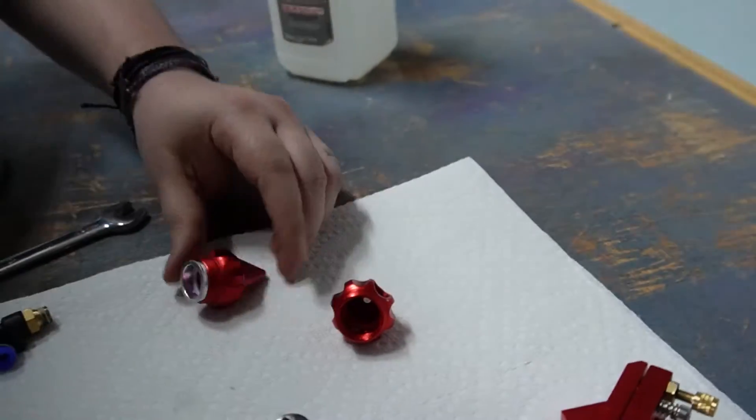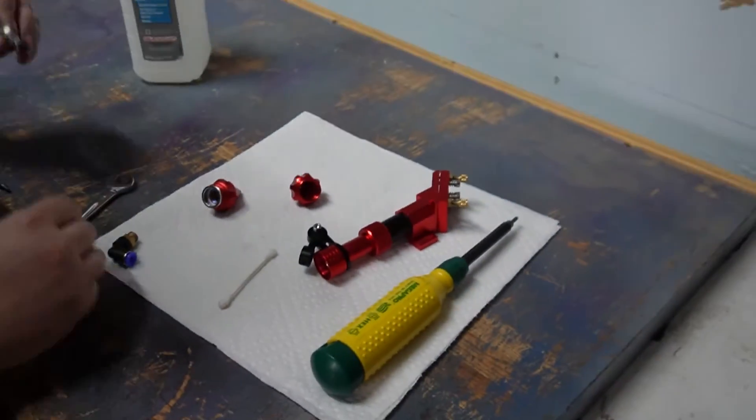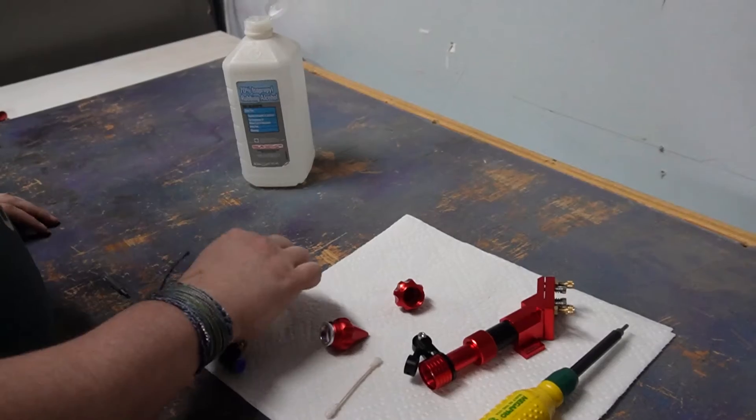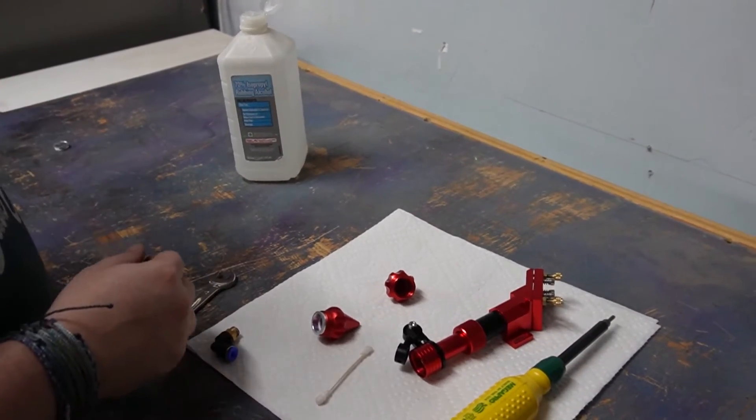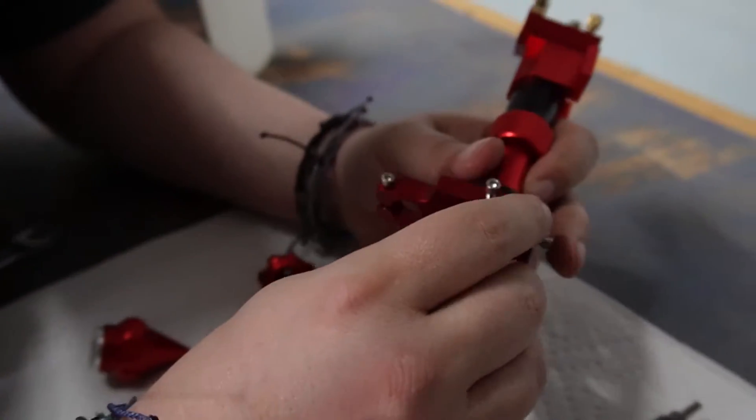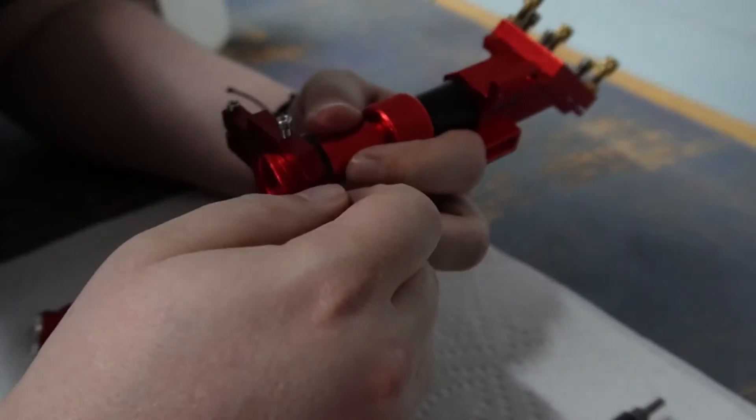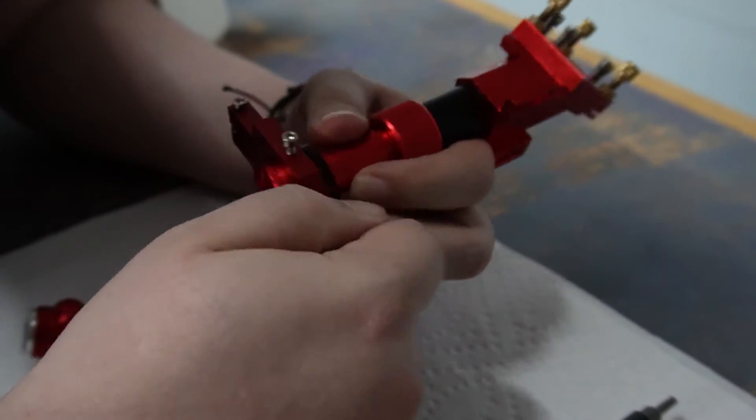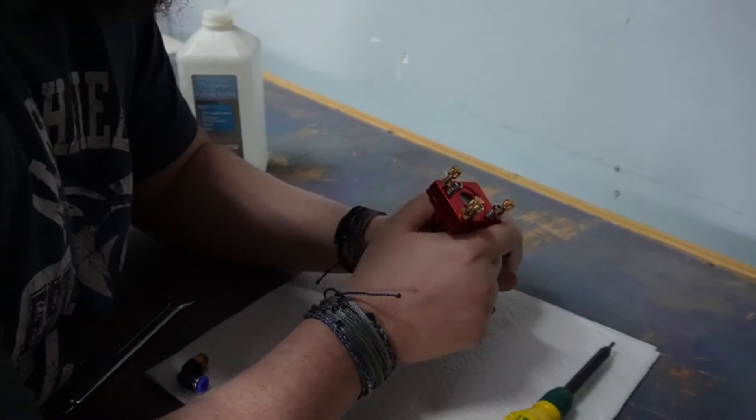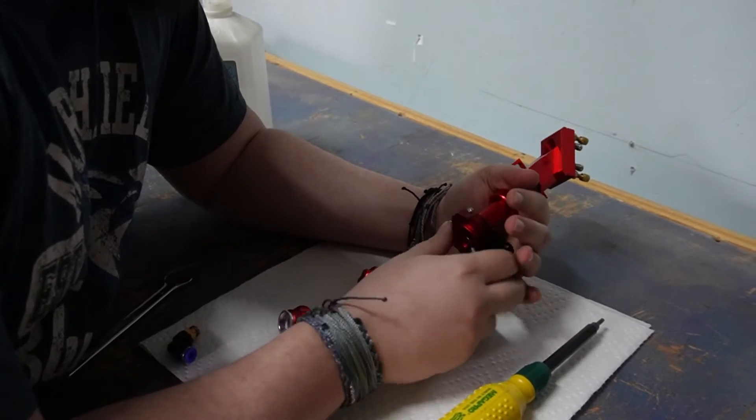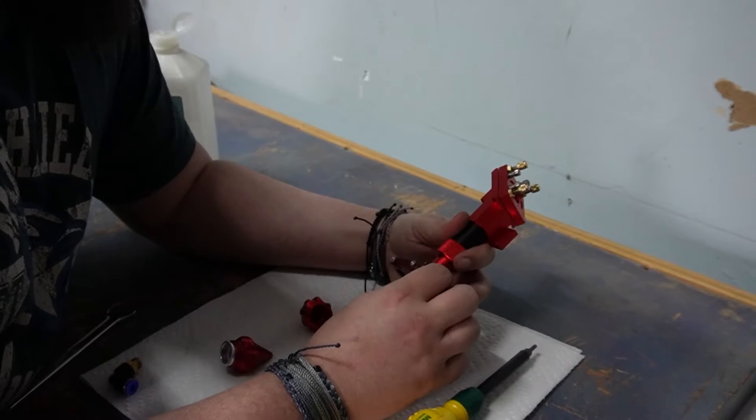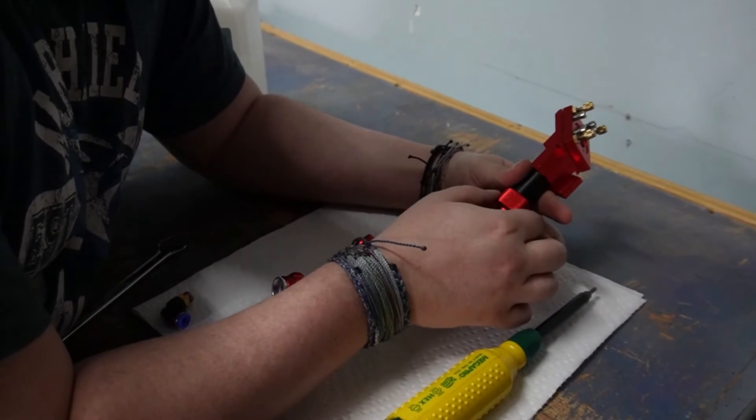And no need to really torque that down. Doesn't need to be too tight, just make sure that it's snug. It's going to have to go on before we can put the base back on. I'm just kind of hand tightening that so that it will be in place.